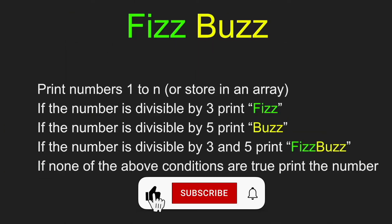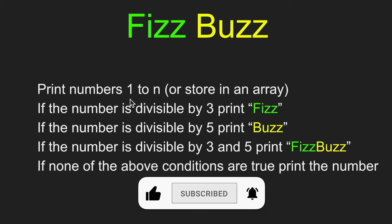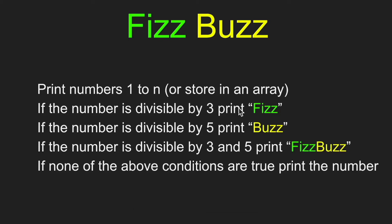Here's how the question typically goes. We're asked to print numbers 1 to end. For each number, we check if it's divisible by 3, and if it is, we print Fizz. If it's divisible by 5, we print Buzz. If it's divisible by 3 and 5, we print FizzBuzz. And if none of these conditions are met, we go ahead and print that number to the screen.